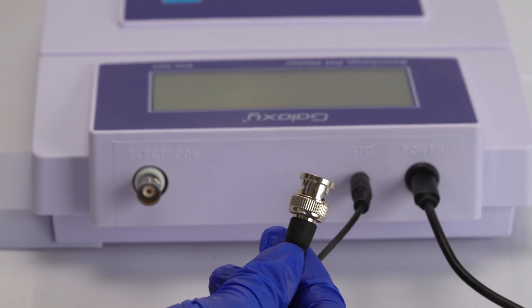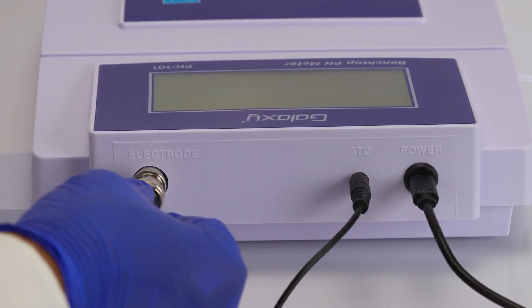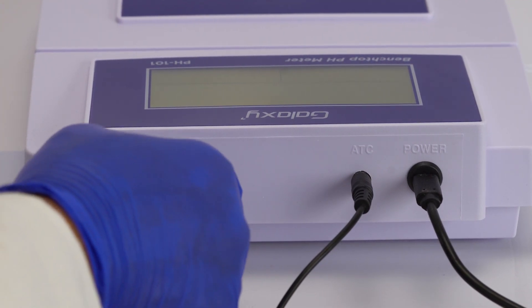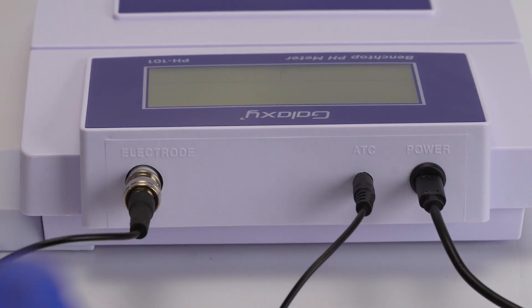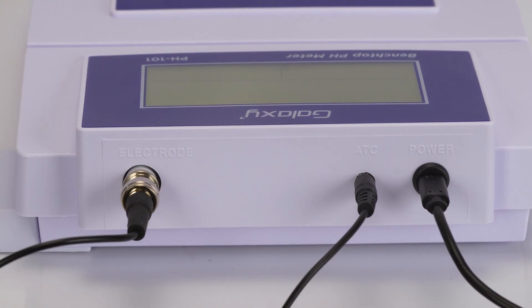Next, take the pH electrode and insert the BNC connector into the socket labeled electrode. Rotate it clockwise until it locks in place. Remember, don't pull on the cable afterward.